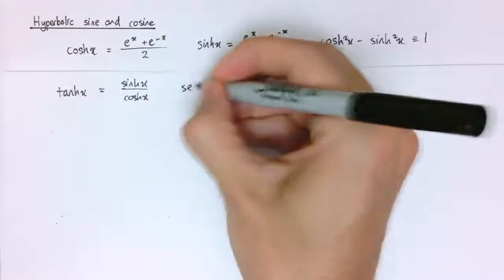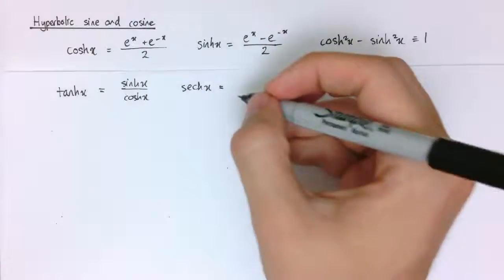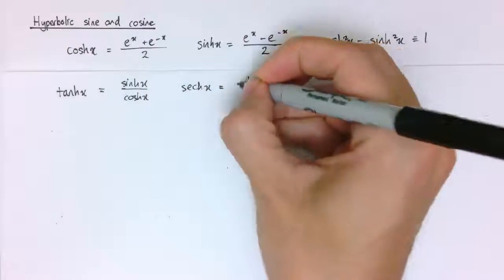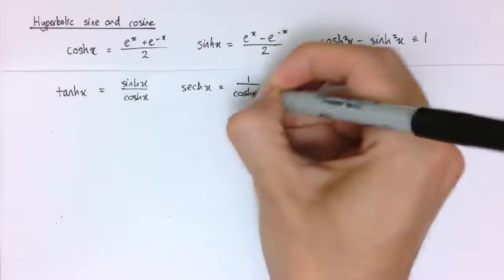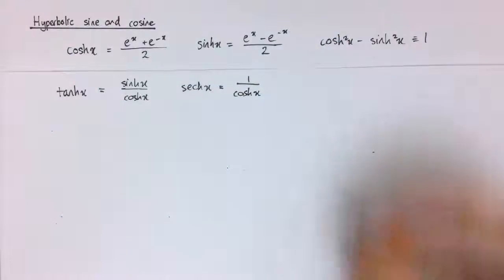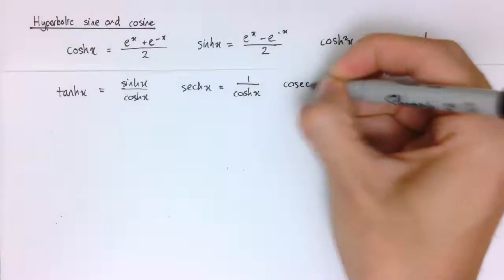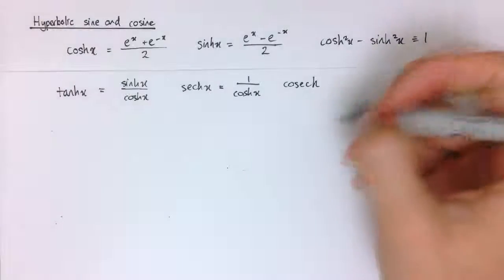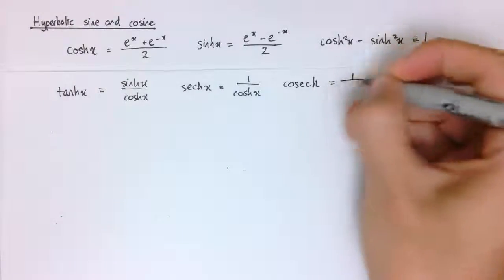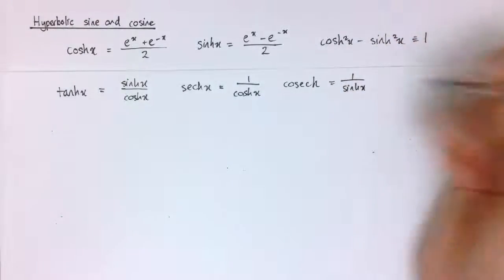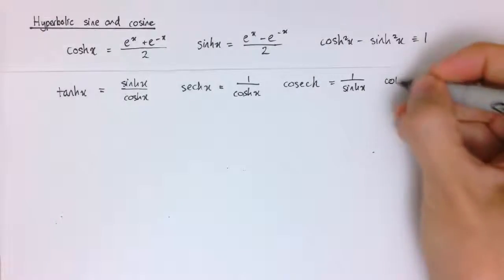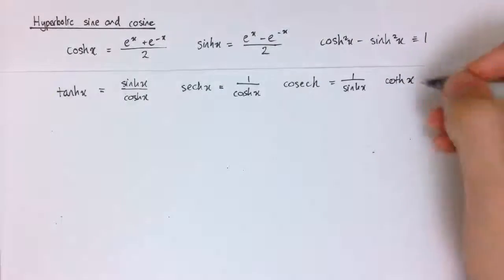We've got sech of x, the hyperbolic sech of x is 1 over the hyperbolic cosine of x, 1 over cosh x. We're going to have cosech, hyperbolic cosech of x, that's going to be 1 over hyperbolic sine of x. And we've got coth of hyperbolic of x, coth x, is 1 over the hyperbolic tan of x.